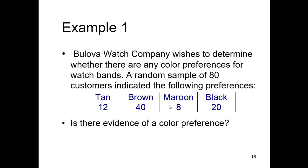Okay, so example number one. I will do some examples here on the PowerPoint presentation where the examples are kind of split out. And then I will have a separate file where I will just do questions. It's just easier to do that. Screen and screen sometimes works for some people and sometimes does not work for some people. Okay, so the Bulova watch company wishes to determine whether there are any color preferences for watch bands. A random sample of 80 customers indicated the following preferences. And we see that there in the table. Is there evidence of a color preference?